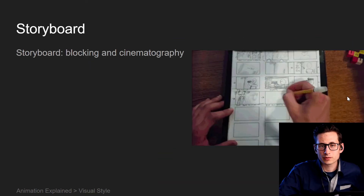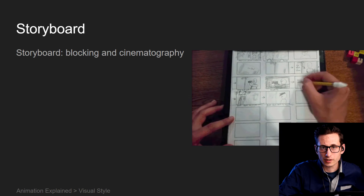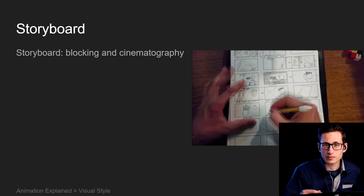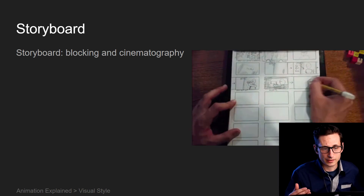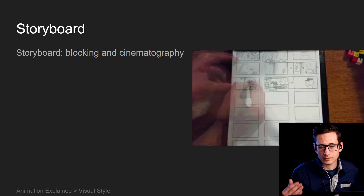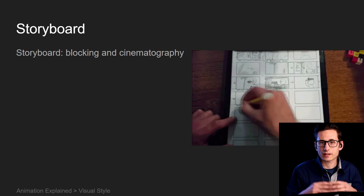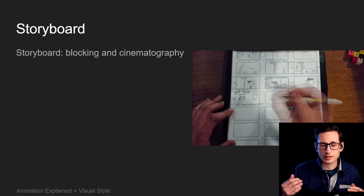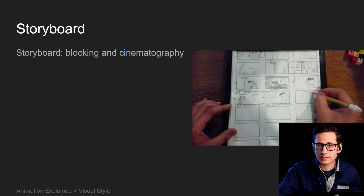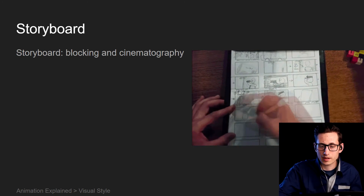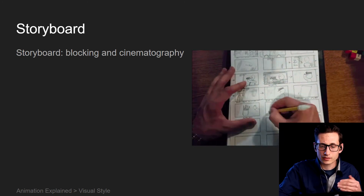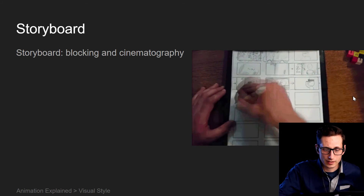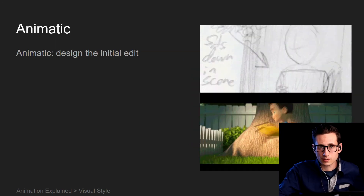I'm sure we're all pretty familiar with the storyboarding process — creating a sketch of every single shot of your film, so that as you go to animate and create it in the 3D world, you've got a rough idea of what it's going to look like, where the character is going to be in relation to the camera. It's important to get this down on paper so that as you get to 3D software, you're not wasting time rendering and re-rendering shots.